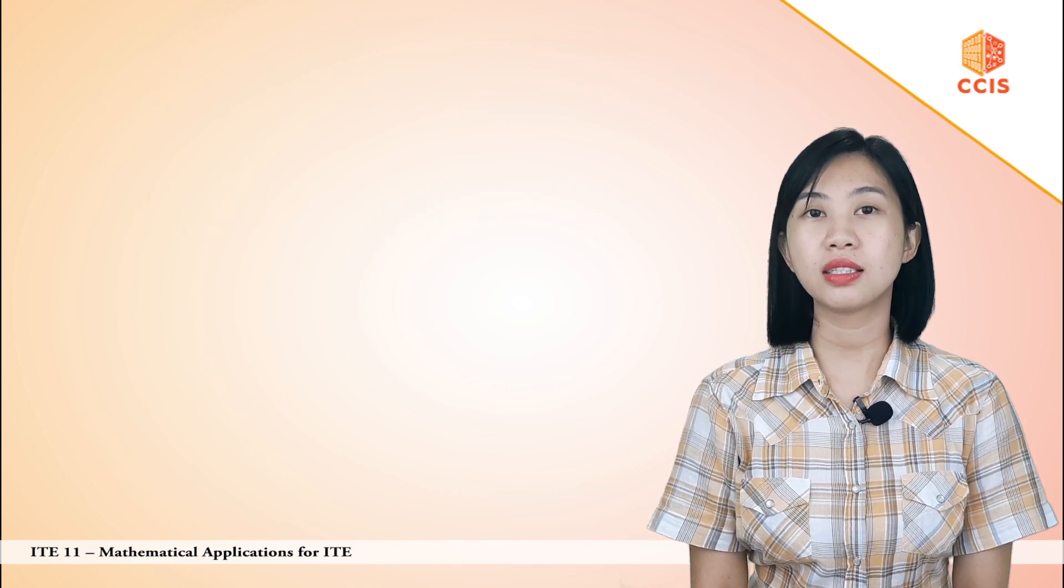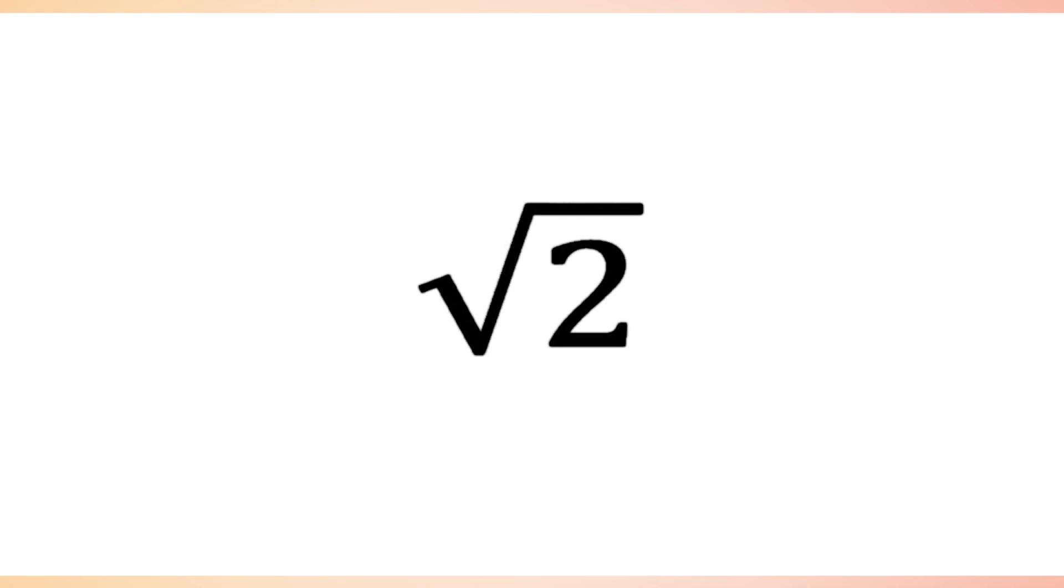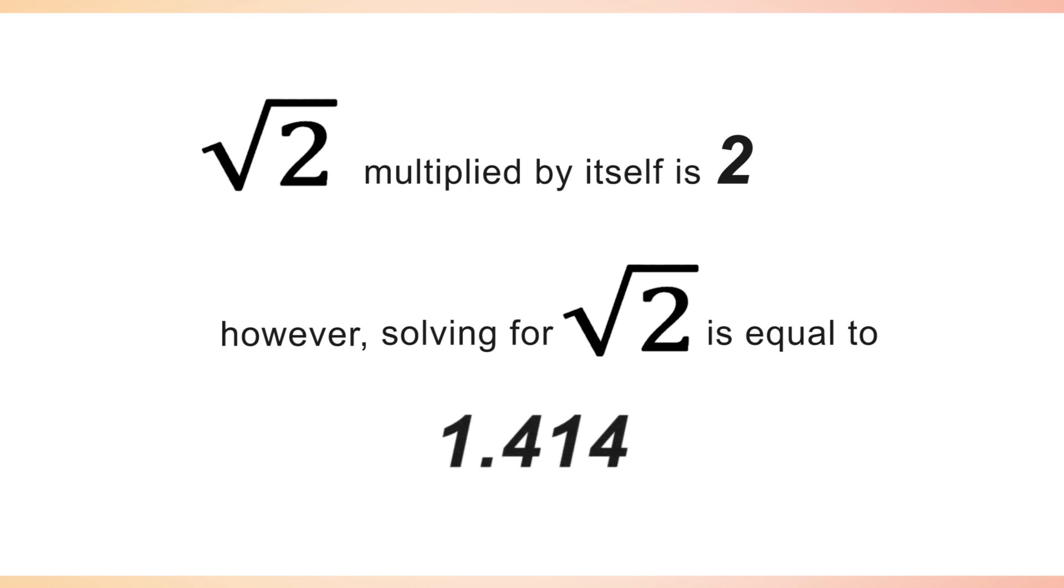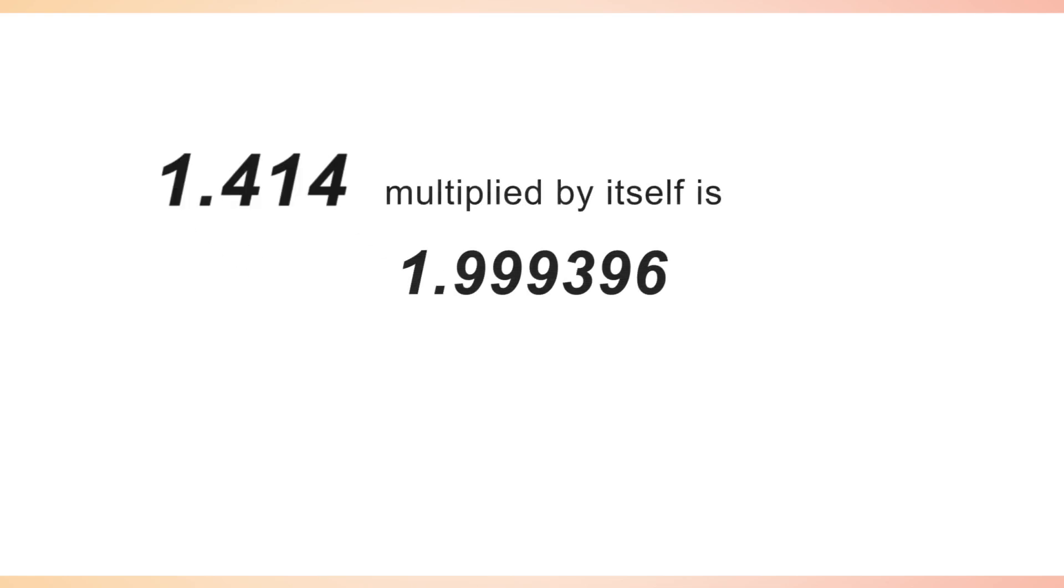To understand clearly, consider the square root of 2. We all know that square root of 2 multiplied by itself is 2. However, when we solve for the square root of 2 first, we get the result of 1.414. And multiply by itself, the answer is 1.9999396, which is not 2.